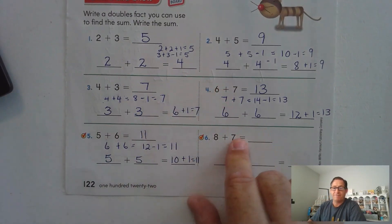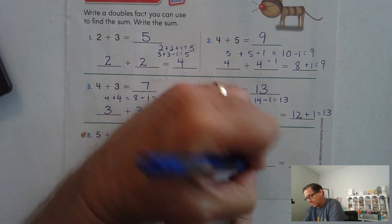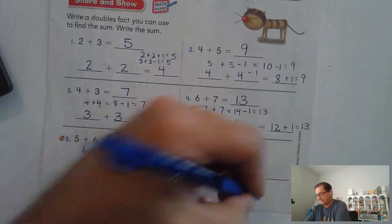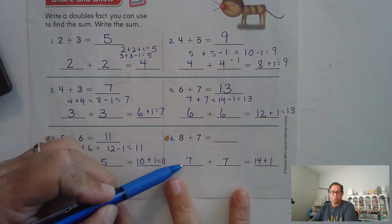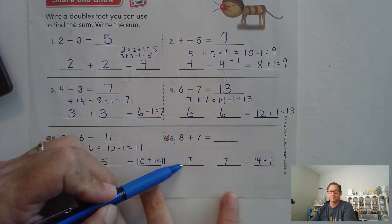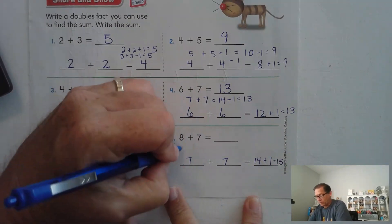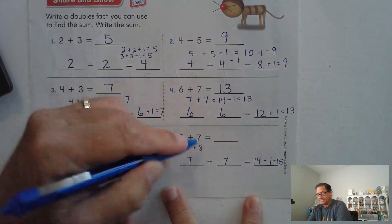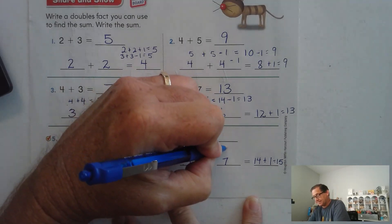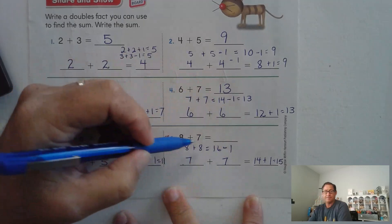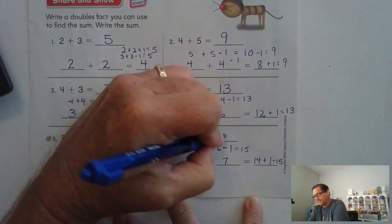8 plus 7 equals what? I could do 7 plus 7, which is 14, plus 1 more, because 8 is 1 more than 7 — that would be 15. Or I could add 1 to the second 7 to make it 8 plus 8, which is 16, then subtract 1 because I added 1 from the 7 to make it 8. And 16 take away 1 is 15.